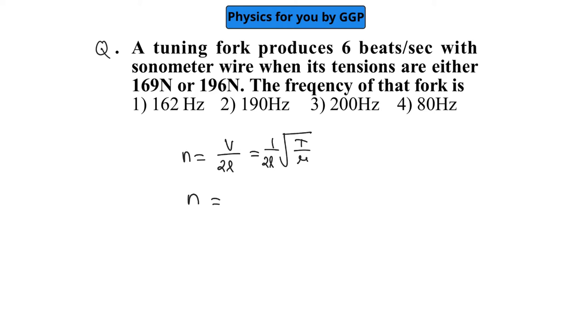We can write n = c√T, where c is a constant. The difference in frequency should be equal to 12, because the beat frequency with one tension is 6 and with the other is also 6, so the net difference is 12.